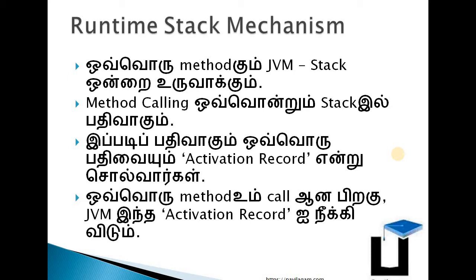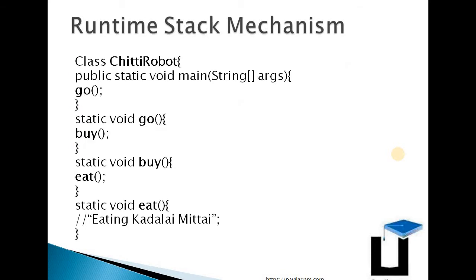When a method completes, the JVM automatically removes it from the stack. Now, we have a class created called Chitty Robot. There is a main method inside it — the main method is the entry point of the robot program.